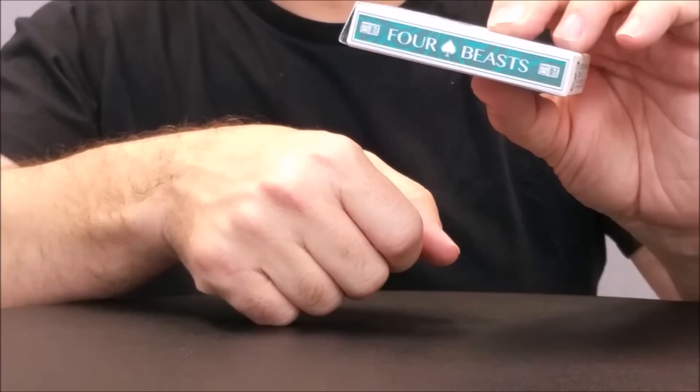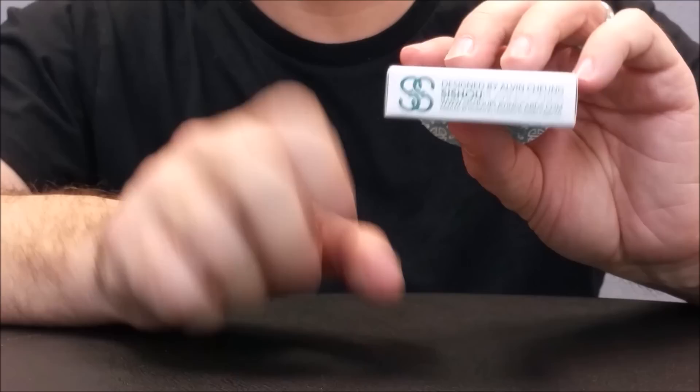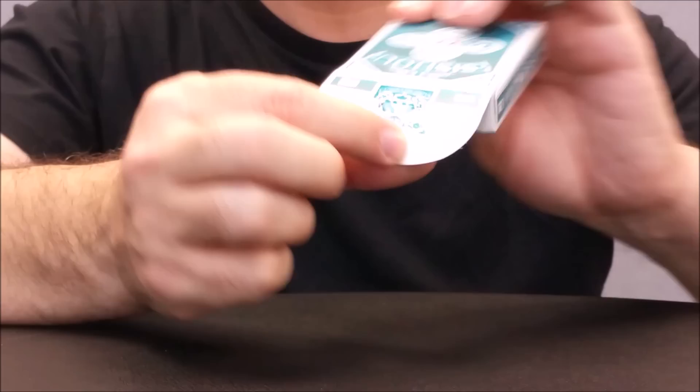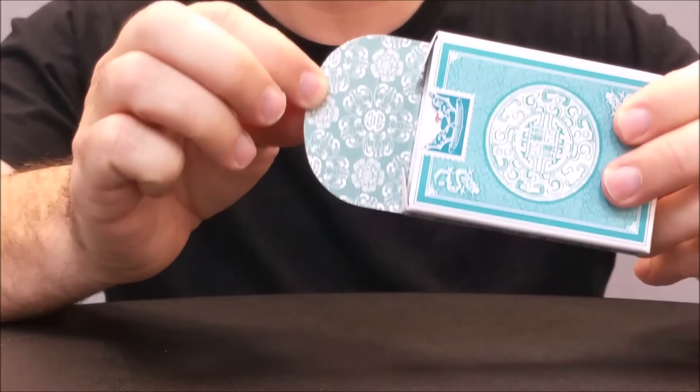On the two long sides, it says Four Beasts with a spade. On the bottom of the tuck, it does say Seashell Playing Cards and has some ad copy. The tuck case flap has a custom tuck seal and it says Seashell Playing Cards there as well.